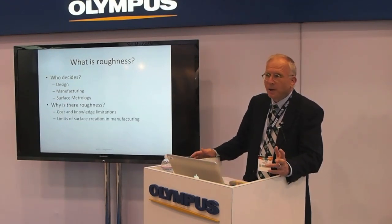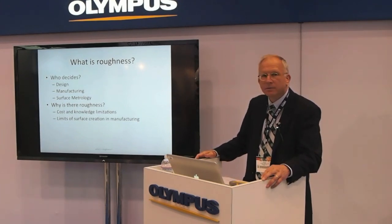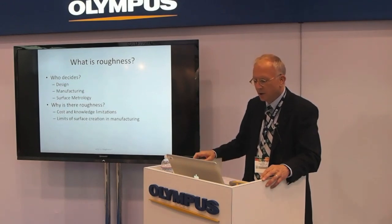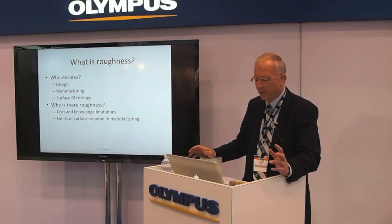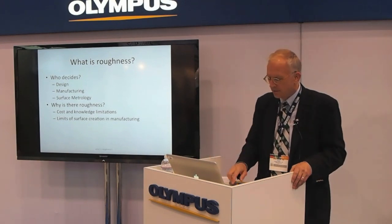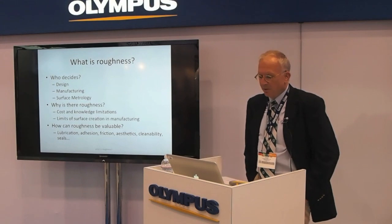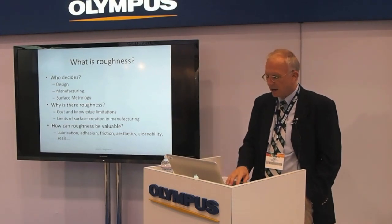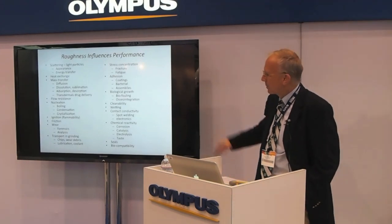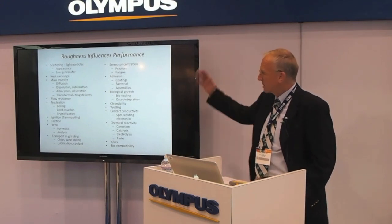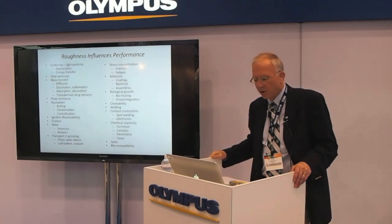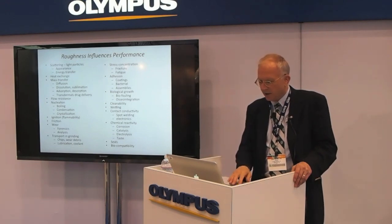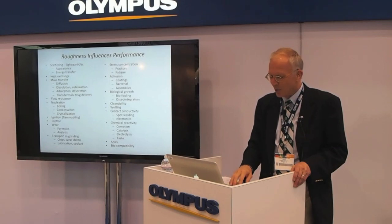Why is there roughness? Why don't we just make everything smooth? Part of it is cost limitation — driving surfaces down to lower roughness levels costs more money. But lots of times we don't know what we want in the surface either, and we're not sure what's going to happen if we eliminate it. How can roughness be valuable? It helps with things like adhesion, friction, lubrication, aesthetics, cleanability, and seals. Here's a list I've been putting together — by no means comprehensive — of all the things that can be influenced by roughness. I'd love to hear additions to the list.